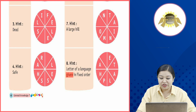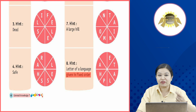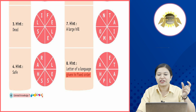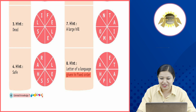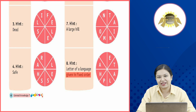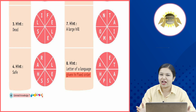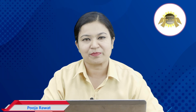Eighth hint: letters of a language given in fixed order. एक ऐसी language जिसमें letters fixed order में लिखे होते हैं — उन्हें हम 'alphabets' कहते हैं। तो आप यहां पर भी लिखकर इसे complete करेंगे। इस तरह से आपकी activity complete हो जाएगी। I hope आपको यह chapter अच्छे से समझ में आया होगा — इसका revision और practice आप खुद से करें।